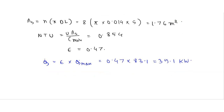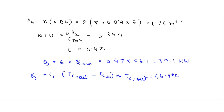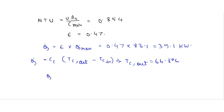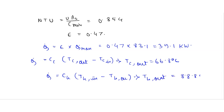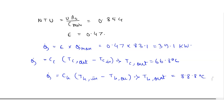Now we have to find the outlet temperatures. We know that q_dot equals C_C times (T_C_out minus T_C_in), from which we get the outlet temperature of the cold fluid T_C_out as 66.8 degrees Celsius. Similarly for hot fluid, q_dot equals C_H times (T_H_in minus T_H_out), giving T_H_out equals 88.8 degrees Celsius. So the outlet temperature for hot fluid is 88.8°C and for cold fluid is 66.8°C.